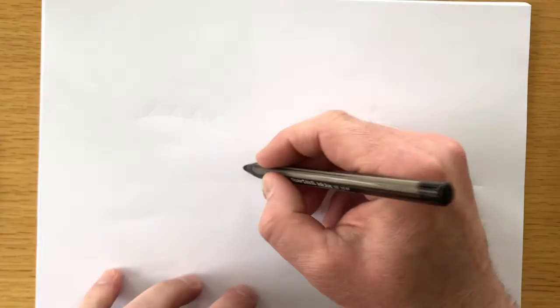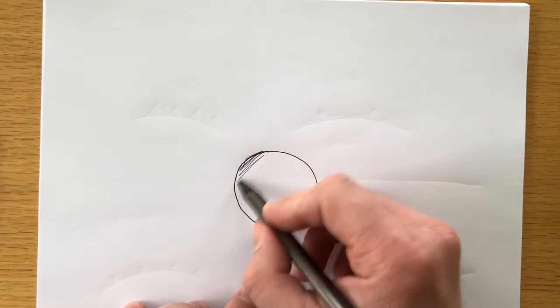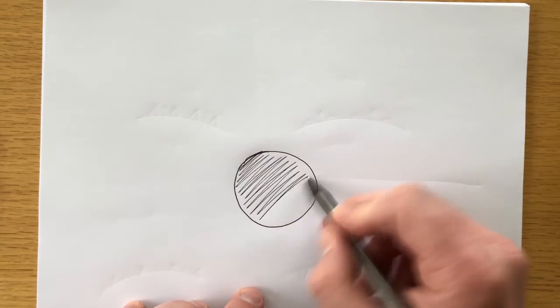Now the other information you need for today is how to draw a surface station model. You start with a circle and then you do the cloud cover, and you have a handout that kind of goes through these different symbols, but I'm gonna run through them real quick. I'm gonna look outside today and it is totally overcast, so I'm gonna shade in the whole entire thing.